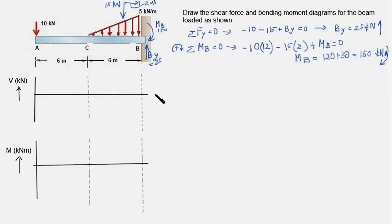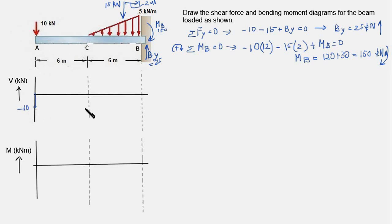Now we draw the shear force curve. To the left of A, shear force is 0. Moving right, we find a 10 kilonewton force in the minus y direction, producing a negative jump of minus 10. There is no force between A and C, so shear force remains at minus 10 between those points. We draw a horizontal line, and at C the value is minus 10.